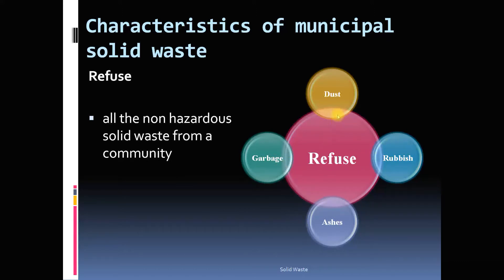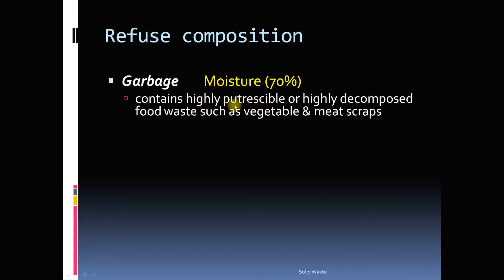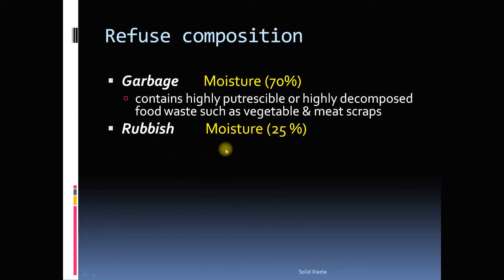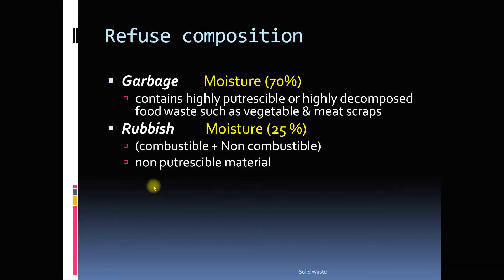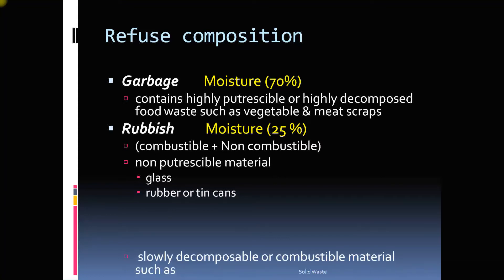Municipal solid waste is also called refuse, and it can be broadly classified into rubbish, garbage, dust, and ashes. Garbage contains highly putrescible material — that means it can decompose fast — and the moisture content of garbage is around 70 percent. For rubbish, the moisture content is 25 percent, and it may contain combustible or non-combustible material. It mostly contains non-putrescible — that means non-biodegradable or slowly biodegradable — material such as glass, rubber, and similar items.